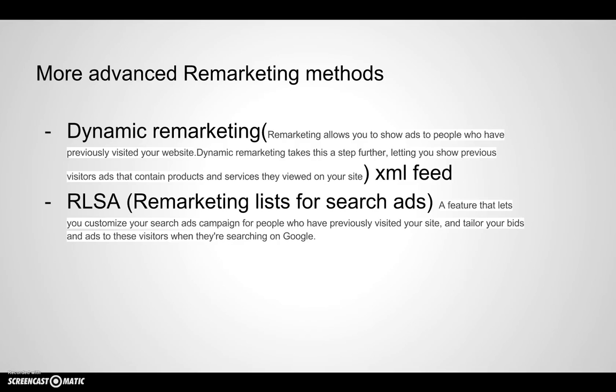We also have some more advanced remarketing methods. We have dynamic remarketing — it's the same as standard remarketing, but it takes it to a level up, letting you show previous visitors ads that contain products and services they viewed on your site. We upload an XML feed of our products and the platform does all the job for us. We also have RLSA — remarketing lists for search ads — a feature that lets you customize your search ads campaign for people who have previously visited your website. We must tailor our bids and ads to these visitors when they're searching on Google, bidding a little higher in order to appear higher.